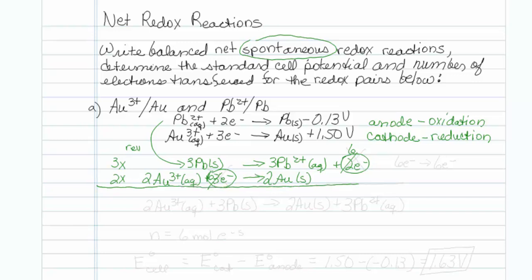I have six electrons going in and six electrons going out, so I can cancel out the electrons and add up the reactions. That gives two Au three plus aqueous, plus three lead solid, going to two Au solid, plus three lead two plus aqueous.